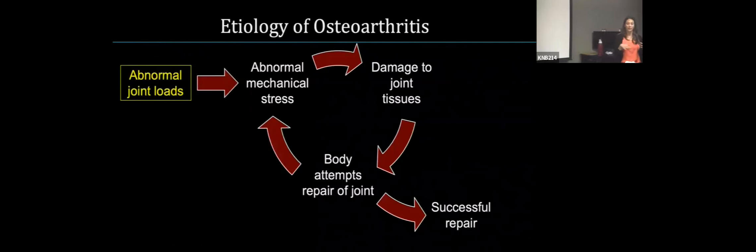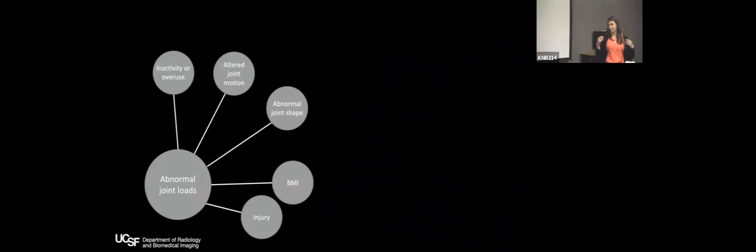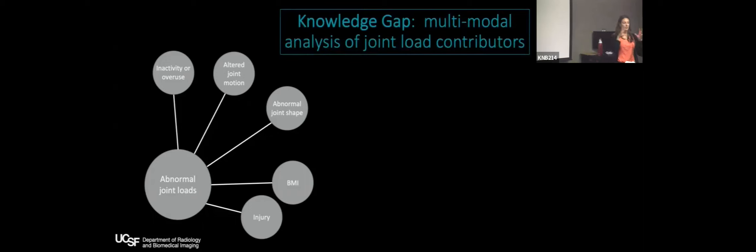The general hypothesis around osteoarthritis is that abnormal or excessive mechanical stress causes damage to joint tissue — such as an ACL rupture causing severe cartilage damage. The body attempts to repair the joint, which can be successful or lead to additional abnormal stress. What I'm interested in is how we can intervene and prevent this cycle. Abnormal loads can be caused by numerous factors, and many studies have investigated one or two at a time, but it's much more likely that OA arises due to a combination of factors. We really need a multimodal analysis.